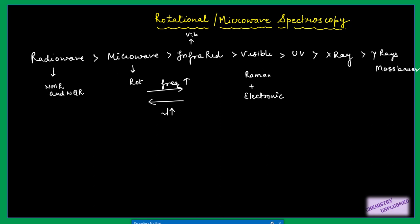Now we move to microwave spectroscopy, also called rotational spectroscopy. We use microwaves for this purpose. The wavelength range of microwaves used is 0.1 cm to 13 cm. This spectroscopy is mainly used for gaseous molecules. For liquids and solids it cannot be used because they are not free to show rotational motion.